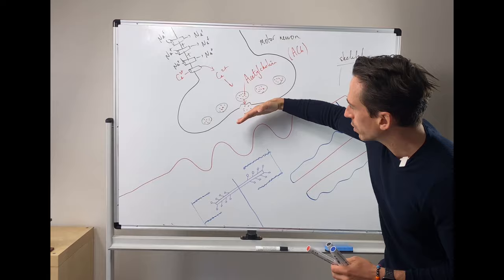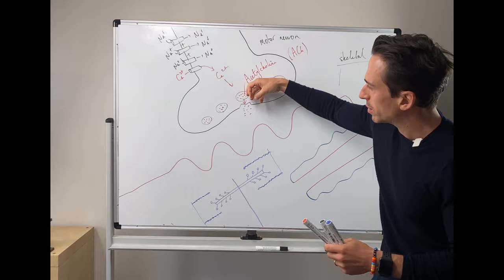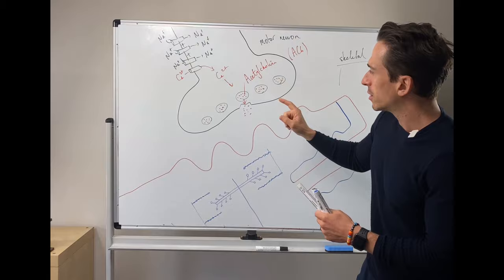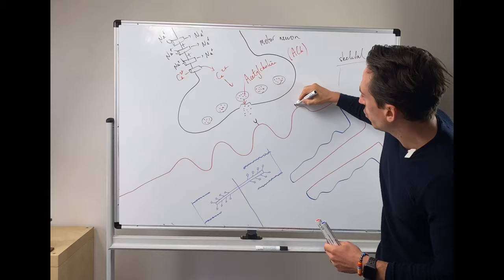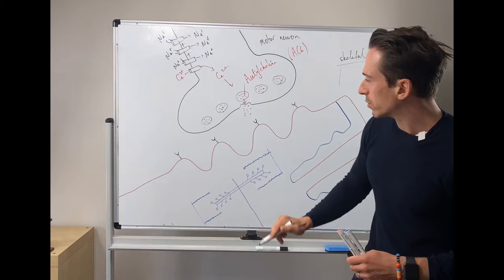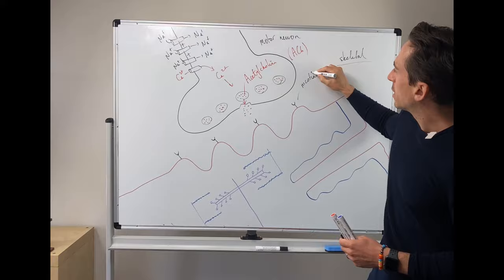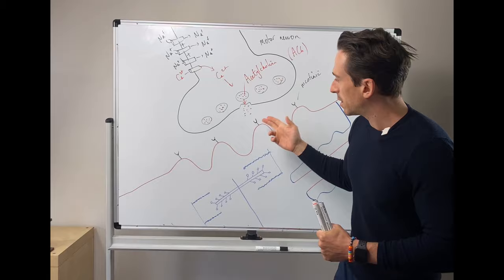When this neurotransmitter crosses the synapse, it must bind to receptors specific for that neurotransmitter. For acetylcholine, those are acetylcholine-specific receptors, and there are two main types: nicotinic and muscarinic. For skeletal muscle, these are nicotinic receptors. Nicotinic sounds like nicotine — one of the components in cigarettes — and this is how we determined they are nicotinic receptors, because nicotine activates them. This is one reason why you have muscular effects when you smoke a cigarette.